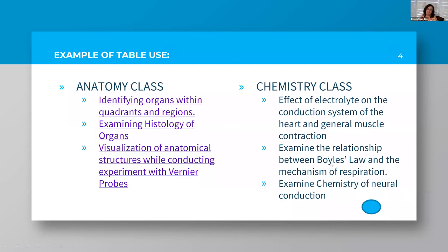In chemistry, I've used the table in several ways. I tell them chemistry is the basic science, so everything deals with chemicals — we look at the effects of sodium, potassium, and calcium on muscle contraction. For Boyle's Law, I take them to the table and show them what happens when the diaphragm is lowered: is volume going to increase or decrease? If volume increases, what happens to pressure? They can relate chemistry to real life events.